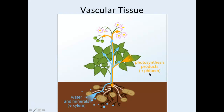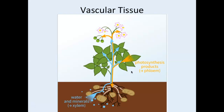The second is the phloem — a network of vessels that transports substances made in the upper parts of the plant. Sugars made in the leaves are transported to all different parts of the plant, because every single part of the plant needs sugar to burn for fuel — to make ATP. So the phloem goes down into the roots but also up into the upper parts of the plant.